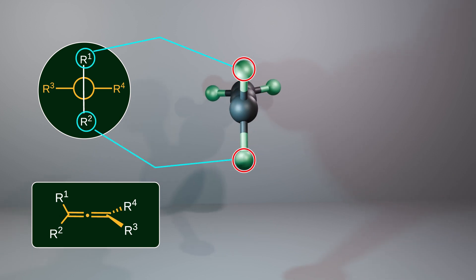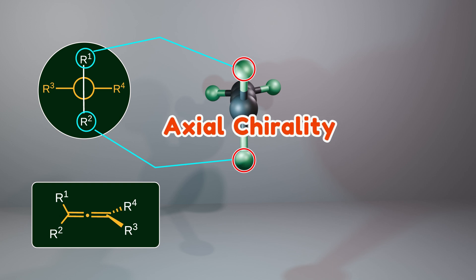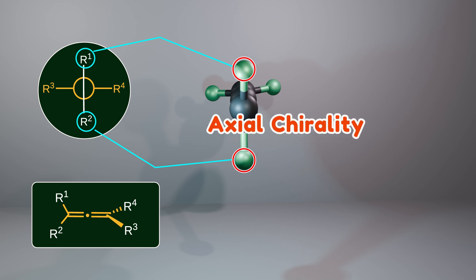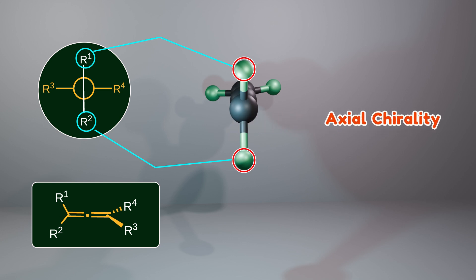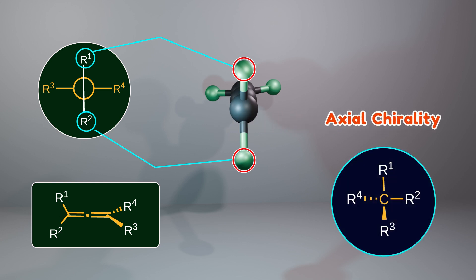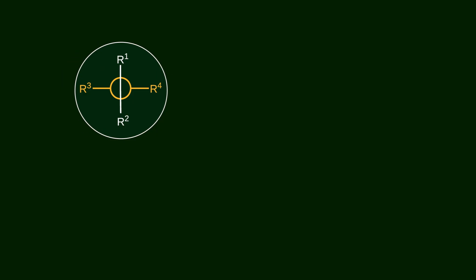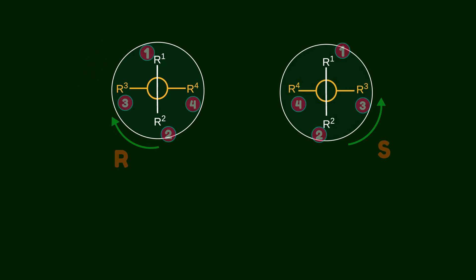One of the interesting consequences of this unique arrangement is the existence of axial chirality in allenes. Even though there is no traditional chiral center like we usually see in organic molecules, this structure can be chiral depending on the pattern of substituents.